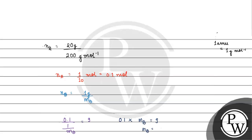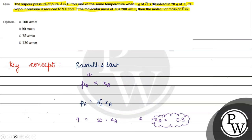Molecular mass of B is basically equal to 90 gram per mole, or 90 amu. Coming back to the question, the correct answer for this question will be option B. I hope you understood it well. Thank you and all the best.